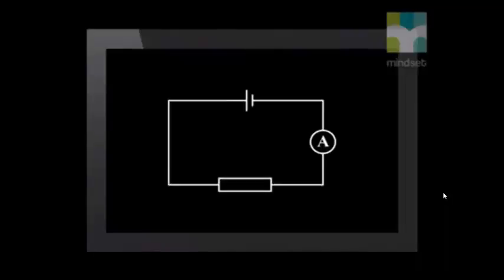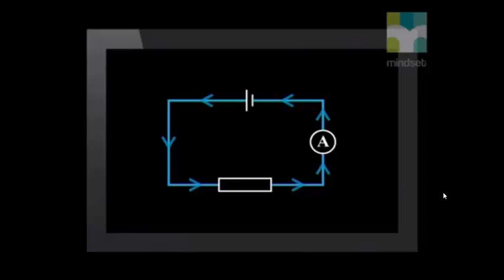We will start with a basic circuit. This circuit consists of a single cell, an ammeter, and a resistor connected in series. The cell provides the energy for the circuit. Chemical energy from the cell is converted to electrical energy in the circuit. This energy causes the electrons in the conducting wire to move around in a closed circuit. The movement of negatively charged electrons is called current.